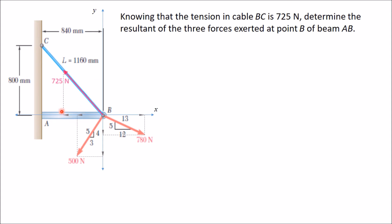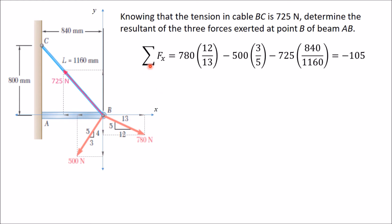To find sigma Fx, start with the 780 Newton horizontal component. Its x-component is 780 × cos θ. Using the right-angle triangle, this angle equals the interior alternate angle, so cos θ = adjacent/hypotenuse = 12/13. The x-component of 500 Newton is negative; its cos θ = 3/5 using its corresponding triangle, giving −500 × (3/5).